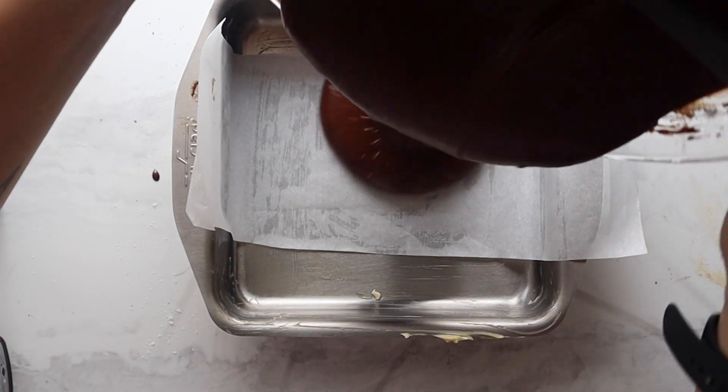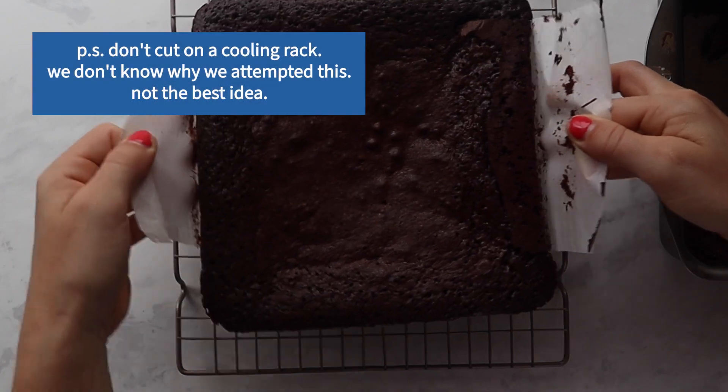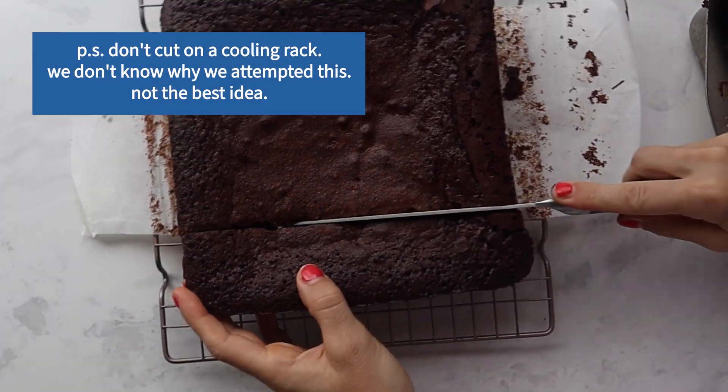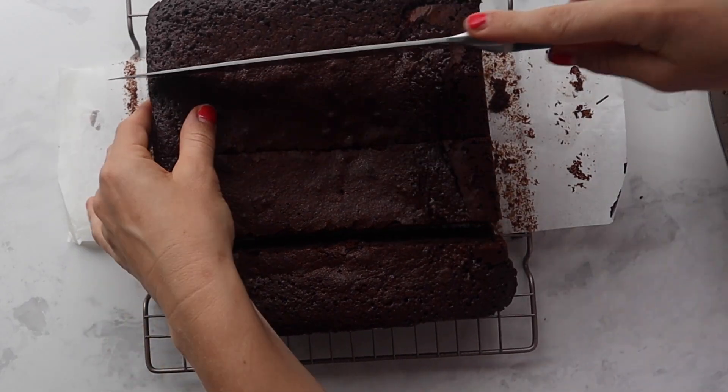Be sure to oil your pan and put it in a parchment sling like this so it's super easy to remove when baking. You're going to bake it until a toothpick comes out mostly clean, but not entirely clean because they're brownies. You want them to be fudgy. It's not like a cake.